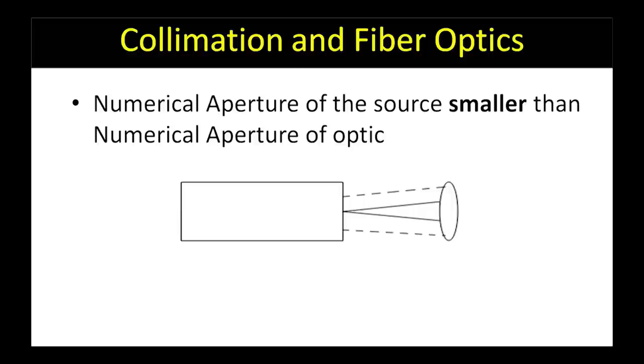If the numerical aperture of the source is smaller than the numerical aperture of the optic, the optic is considered underfilled and all the light will be collected, but it will not span over the entire clear aperture of the optic.